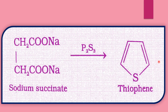The next preparation: sodium succinate reacts with phosphorus trisulfide (P₂S₃) and formation of thiophenes. The reactant CH₂COONa·CH₂COONa is sodium succinate. It reacts with P₂S₃ and forms thiophene. This is also a 5-membered ring formation with sulfur as the heteroatom — it is thiophene, product formed from sodium succinate.